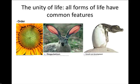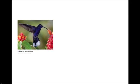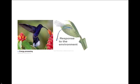In growth and development, inherited genes control the pattern of growth and development of organisms. All living organisms require energy to survive, which is called energy processing. The environment plays a huge role on an organism, and in order to survive, it needs to be responsive to the environment.